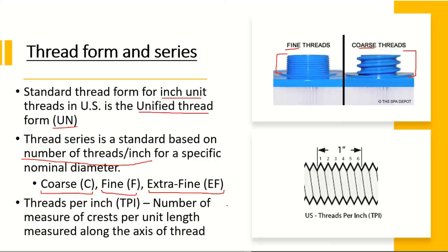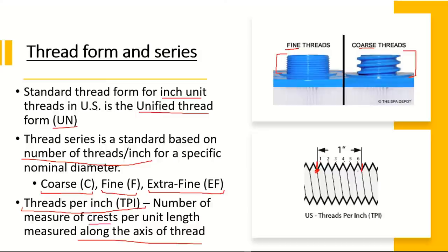Extra fine threads are typically used in aerospace applications. One of the most important things is the pitch of the thread, or threads per inch — terms used in both the inch and metric systems. Threads per inch is basically a number of crests per unit length measured along the axis of the thread. If you mark the distance of one inch and count the number of crests in that distance, starting and ending at the same point, the count becomes the TPI. In this example, we have six TPI.